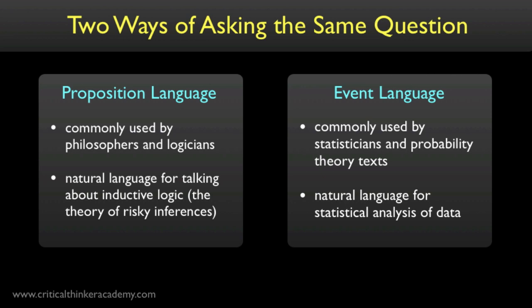So why do we have these two different languages? Well, the proposition language is most natural when we're talking about what beliefs can be inferred on the basis of what evidence, or how likely it is that the conclusion of an argument is true given the premises. This is the domain of inductive logic, so you're more likely to see this language in a logic text. Also, the proposition language might be more natural under certain interpretations of the probability concept than others. For example, statements about subjective probability, where probabilities are associated with degrees of belief, are more natural in the proposition language than in the event language.